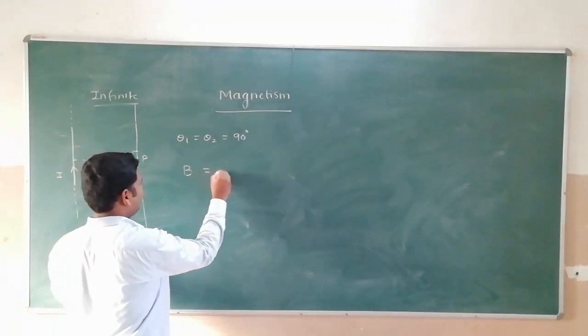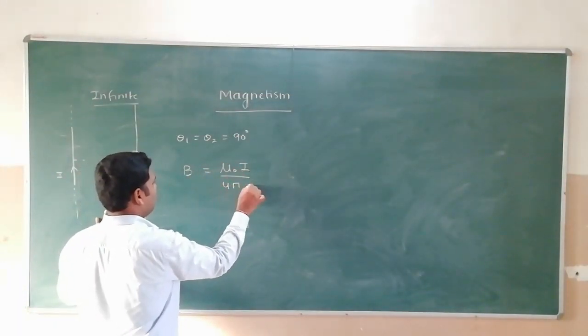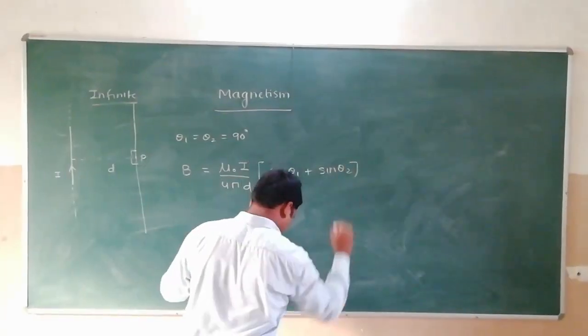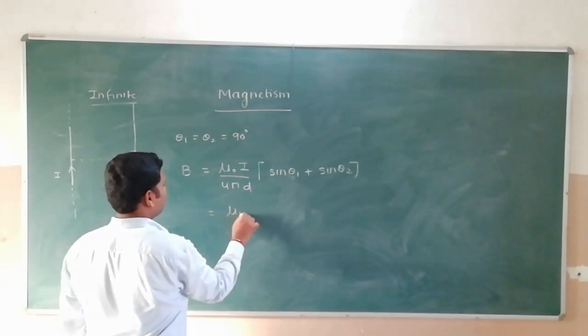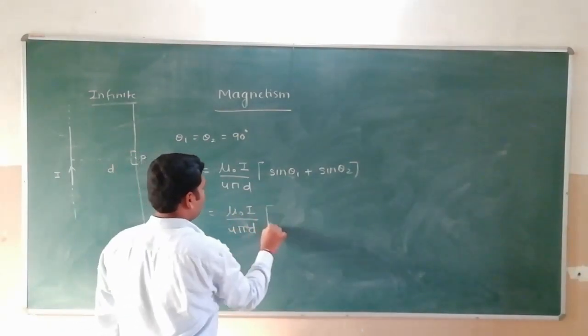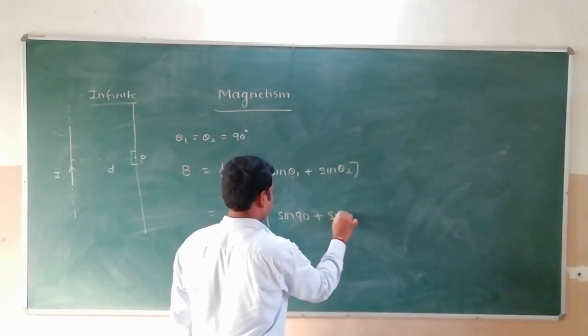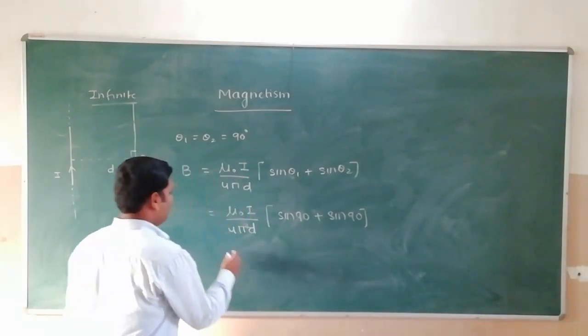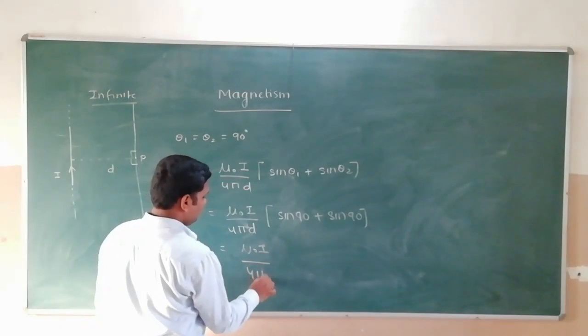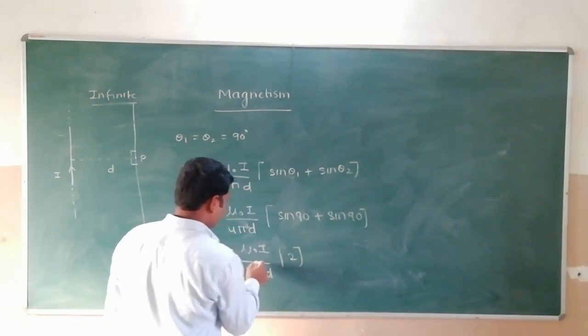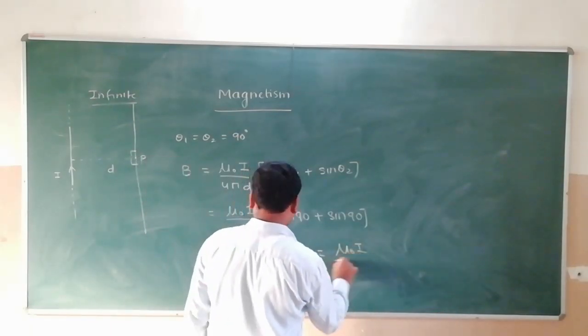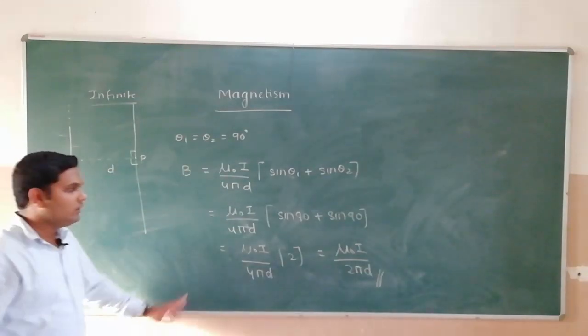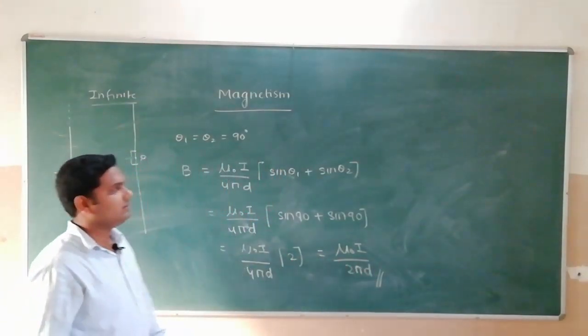What is the formula we have? B equals mu not i by 4 pi d into sin theta 1 plus sin theta 2. Theta 1 and theta 2 are 90 degrees each, so mu not i by 4 pi d into sin 90 plus sin 90. Sin 90 is 1, sin 90 is 1, so 1 plus 1 equals 2. We get mu not i by 4 pi d times 2. 2 cancels with 4, we get mu not i by 2 pi d. For infinite wire, the formula is mu not i upon 2 pi d.